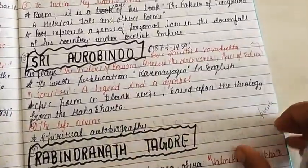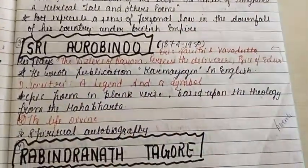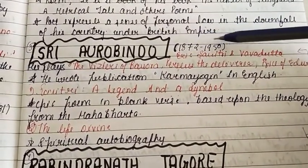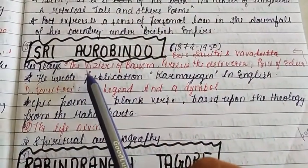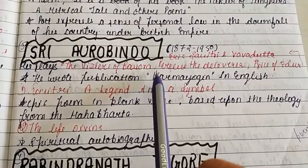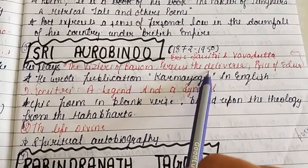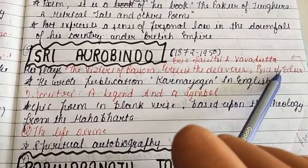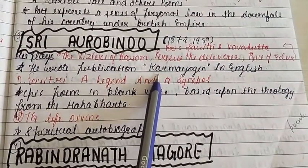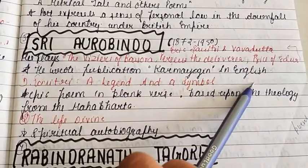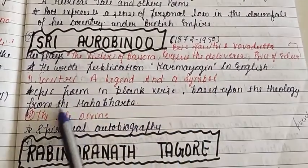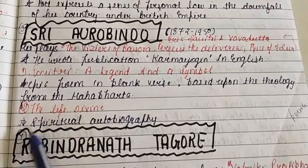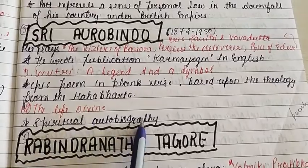The third important poet was Sri Aurobindo. His lifespan was 1872 to 1950. He wrote plays including 'The Viziers of Bassora' and 'Perseus the Deliverer.' His major work 'Savitri: A Legend and a Symbol' is an epic poem in blank verse based upon the story of Savitri from the Mahabharata, and is considered a spiritual autobiography.